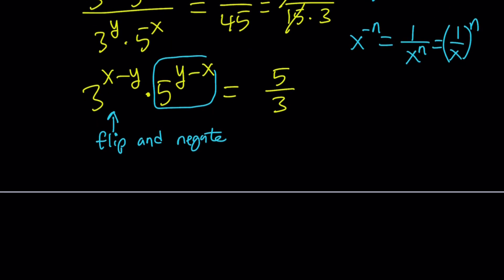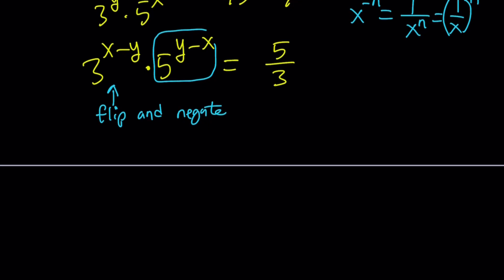We're going to flip and negate. I don't want you to just memorize flip and negate, but that sometimes helps. I'm basically trying to write it as 3 to the power negative 1 times y minus x because it's the opposite of that. And now this becomes 3 to the power negative 1 to the power y minus x, which equals 1 over 3 to the power y minus x. That's what I mean by flip and negate.